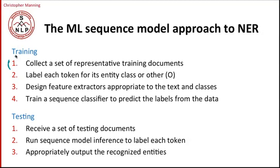And then we're going to go through each word and label each token for its entity class. So if it's not in any entity class, it will be labeled other, which is normally denoted O. Then on the machine learning classifier side, we're going to design appropriate feature extractors for identifying words of the classes. And then we're going to train a sequence classifier whose job is to do the best job possible it can of labeling each token with its entity class or other.